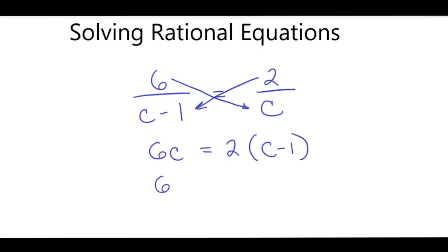That means I have 6C equals 2C minus 2. I want to get the C's together, so I will subtract 2C on both sides. I'll cancel that, and I'm left with 4C equals negative 2.